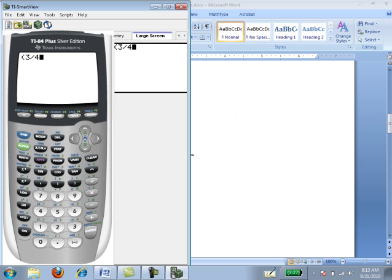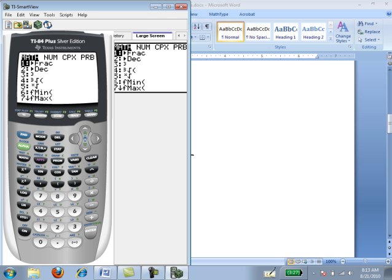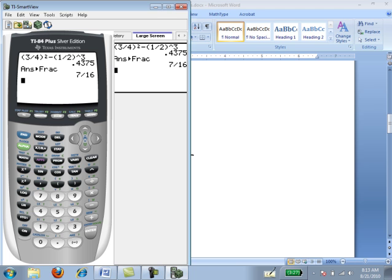I get (3/4)², I put the 3/4 in parentheses, minus (1/2)³, put the 1/2 in parentheses, press enter, and then I do a math, enter, to turn it to a fraction, and we get 7/16 as we thought.